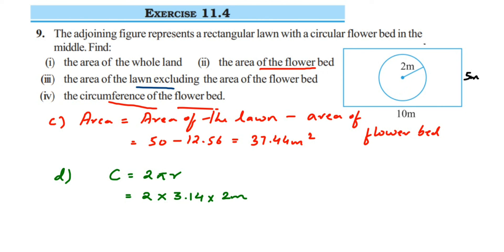When you multiply 3.14 by 2 by 2, you get 12.56. So the circumference of the flower bed is 12.56 meters. That's it — we have done all four questions. I hope this is clear. In case you have any further questions or doubts, you can drop a comment below. Thank you so much for watching.